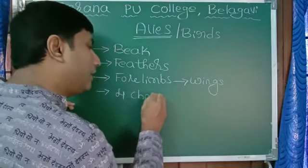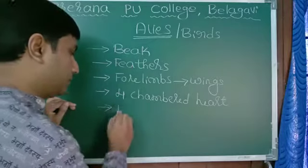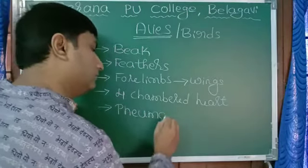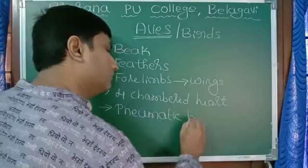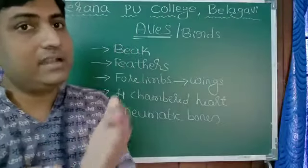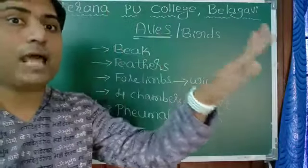They have a very well-developed circulatory system with a four-chambered heart. They also have pneumatic bones, which means hollow bones filled with air, so that the body becomes very light and they can easily fly.